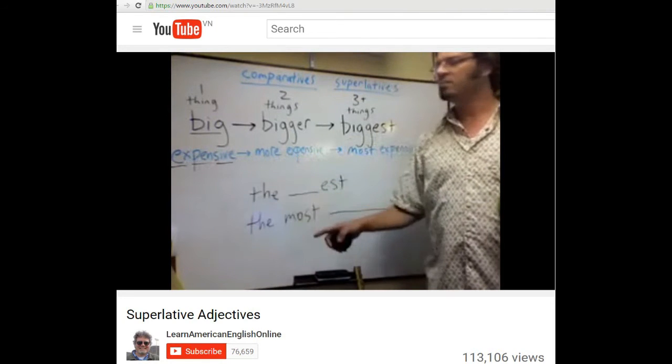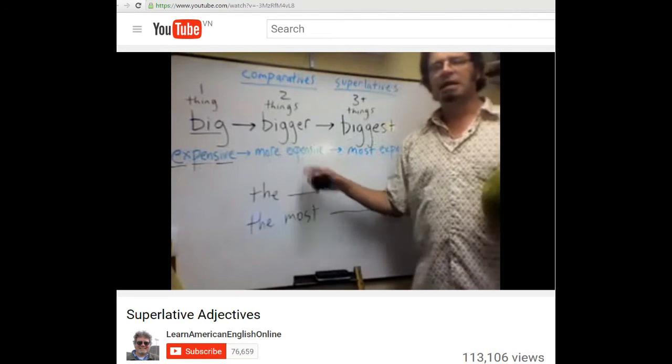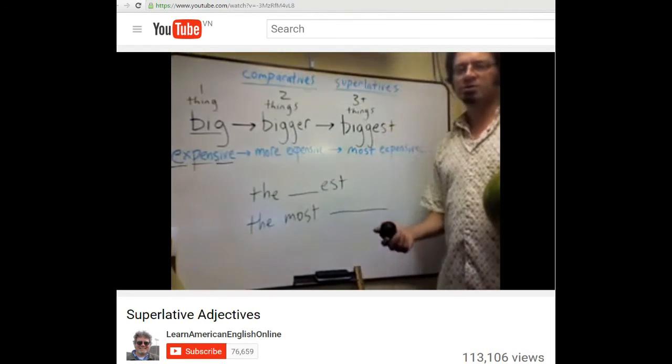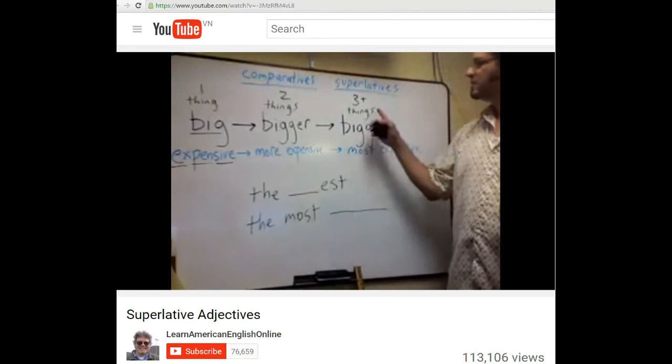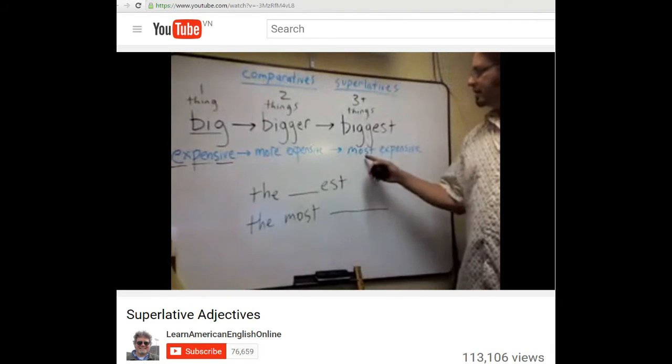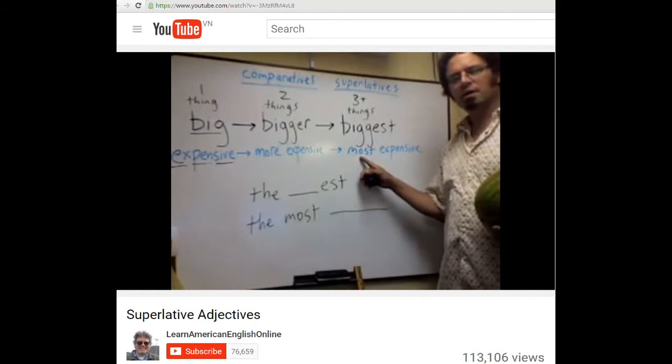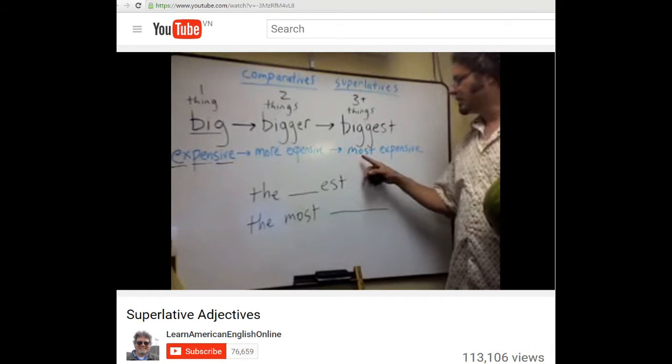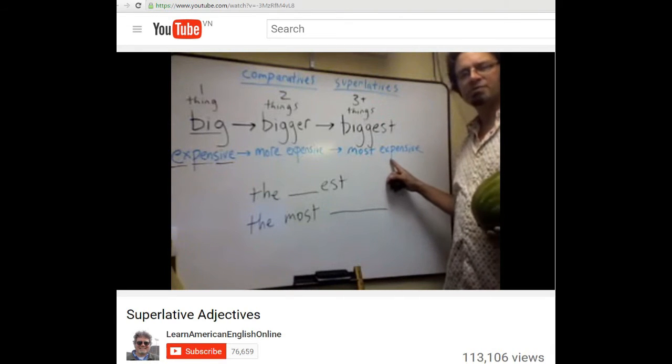In the comparative form, more expensive if we look at the difference between two things. And if we look at the difference among three things and we use the word expensive to describe a noun, then we say it is the most expensive.